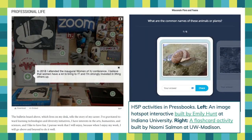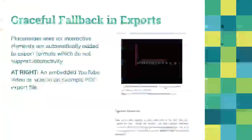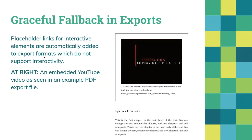We also want to make sure that if we're making an export that doesn't include interaction — like a print PDF — we have a graceful fallback. If there was a YouTube video, the PDF will say there was a YouTube element that's been excluded from this version; here's the URL to find it. We make sure that even in formats without interaction, the learner knows something was there and where to find it.